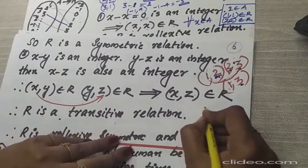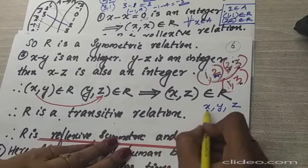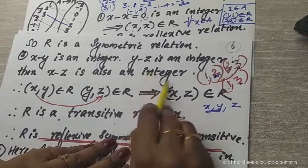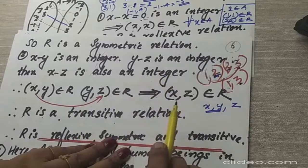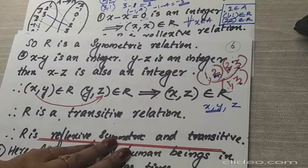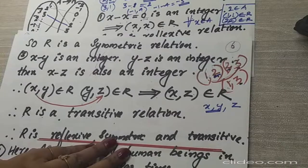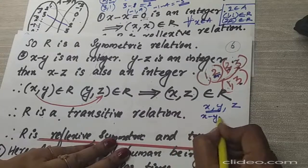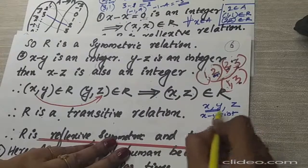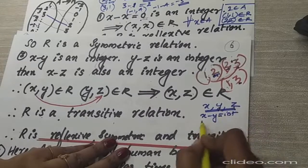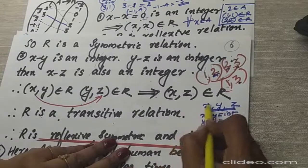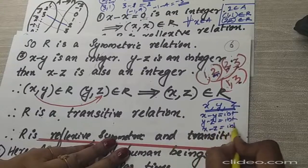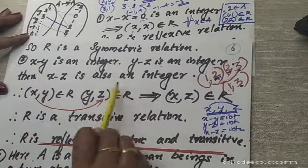In general, how do we write this? Take elements x, y, and z. First, show the difference between x and y — that is definitely an integer. Then take (y, z): the difference between y and z is also an integer. Then you can show that x minus z is also an integer. Since we cannot write all ordered pairs, we write the general form to show that all pairs satisfy the transitive condition.